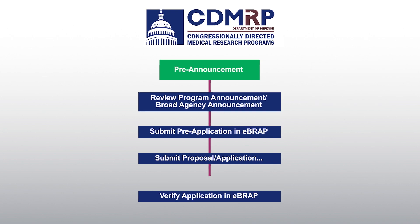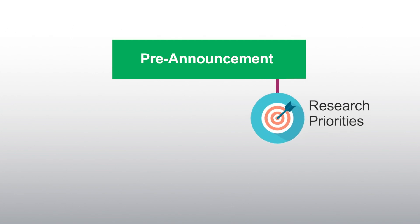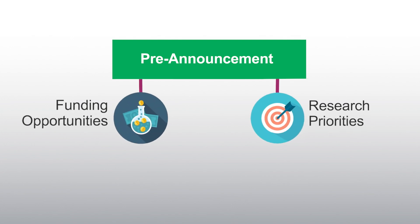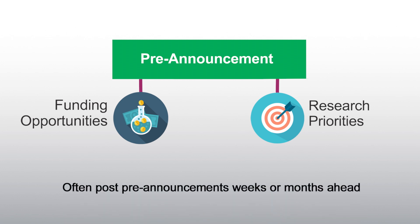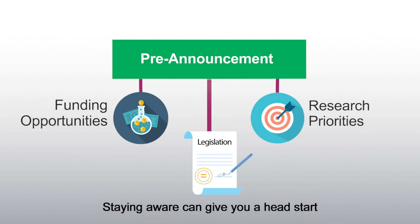Let's start with funding opportunity pre-announcements. These pre-announcements, although not provided for all programs or all funding opportunities, provide information about a program's anticipated research priorities and short summaries about potential funding opportunities for the fiscal year. When available, programs often post pre-announcements weeks and sometimes even months before the actual funding opportunities are open for applications. Remember, CDMRP cannot release funding opportunities until the President signs the Defense Appropriations Bill. Staying aware of when pre-announcements are posted can be helpful and give you a head start in planning your applications.